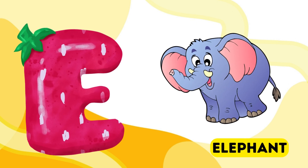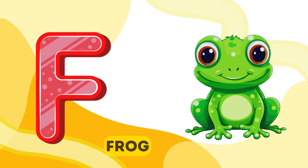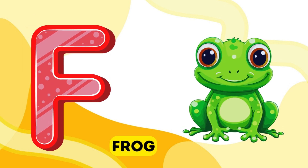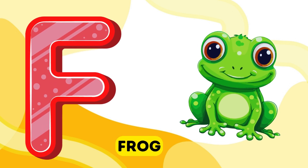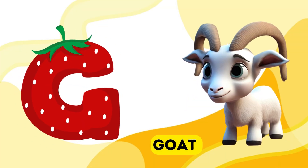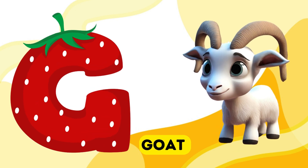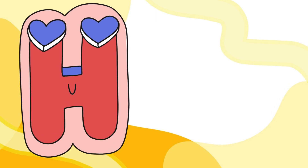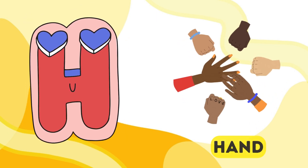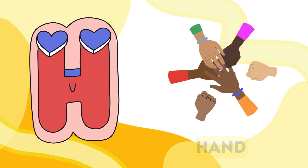E is for elephant, e-e-elephant. F is for frog, f-f-frog. G is for goat, g-g-goat. H is for hand, h-h-hand.